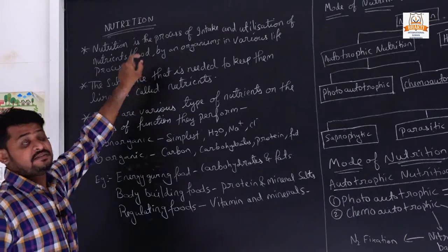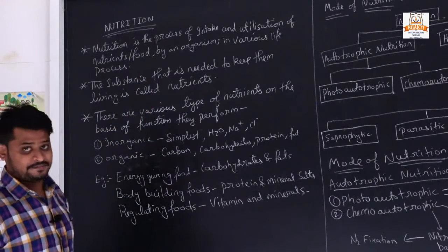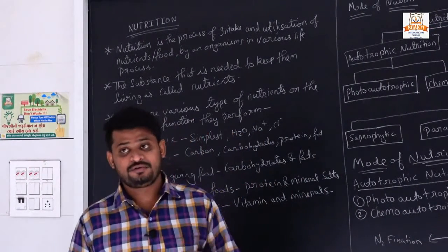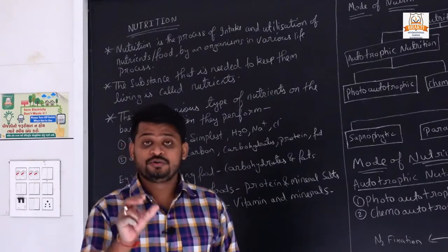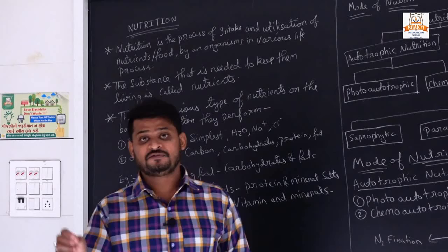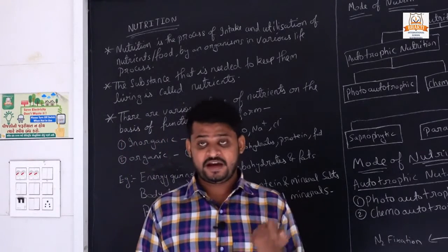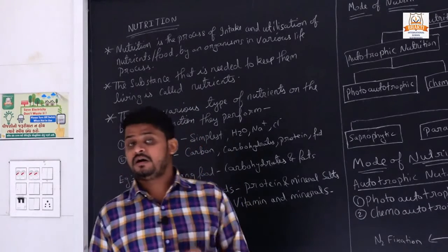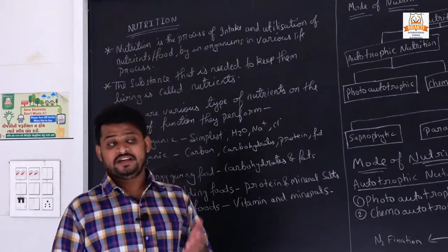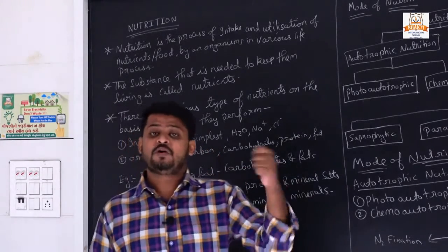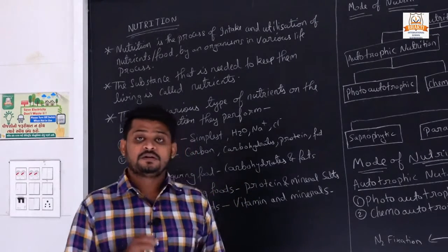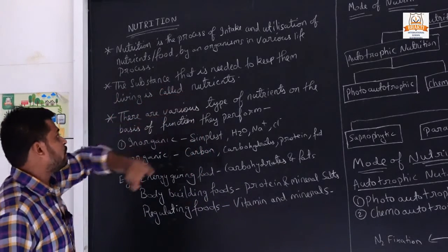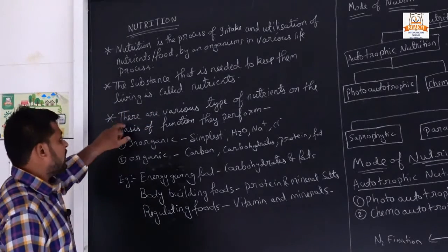Nutrition is a very important process for an organism. But what are nutrients? Nutrients are the substances that are present in food, like carbohydrates, proteins, and fats. These are all the nutrients that are very important for the functioning of our organs and the functioning of all the cells in our body. If all cells get the proper nutrients they need, then all our cells will work properly.